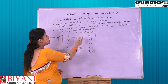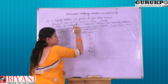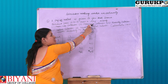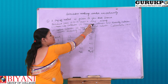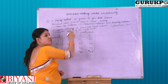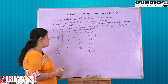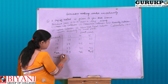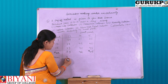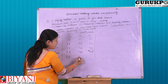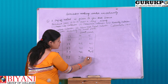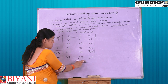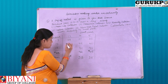Moving on to the next criteria, that is Maximin criteria. As the name suggests, we first have to focus on the minimum entry, and afterwards, we have to select the maximum entry from among the minimum entry levels. The minimum value for the 13 stock level is 39, here the minimum value is 37, and here the minimum value is 35. Amongst these minimum values, we have to select the maximum value, that is 39.